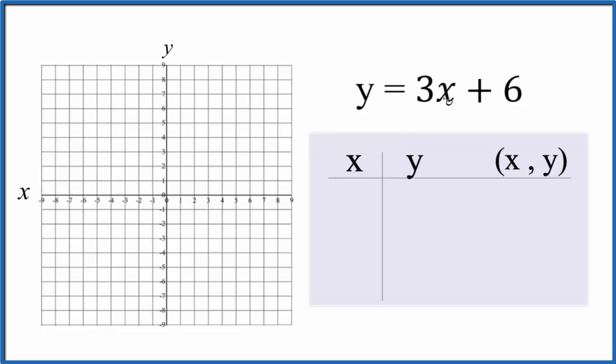So when I choose values to put in for x I really want things to fit on my graph. I think I'll start out with 0 for x, so 3 times 0 that's 0, 0 plus 6 that's just 6. So my first point is 0, 6 and that'll fit on my graph.